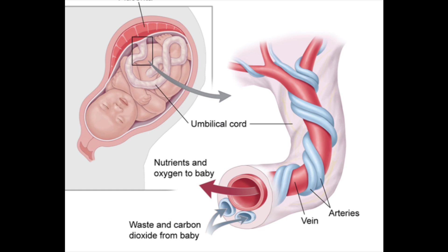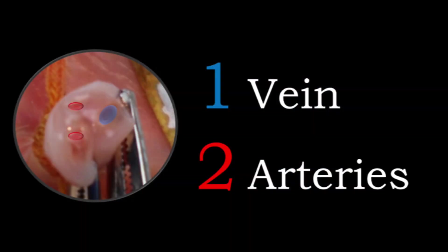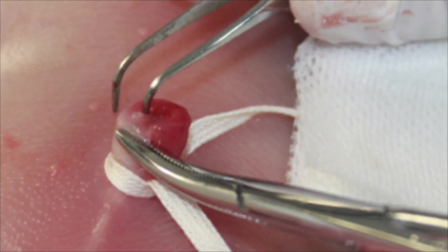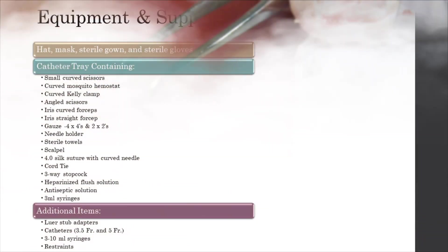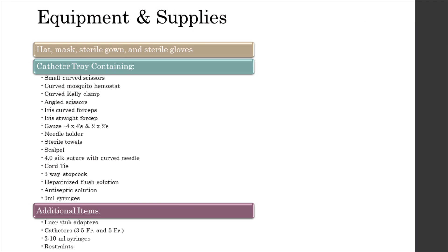As a fetus, these vessels served to bring nutrients and oxygen to the baby and remove waste and carbon dioxide. Typically, there are two umbilical arteries and one umbilical vein. In order to access these vessels, you'll first need to gather your equipment and supplies.